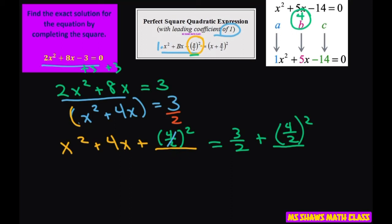So what we get is x squared plus 4x plus 4 equals 3 halves plus 4.